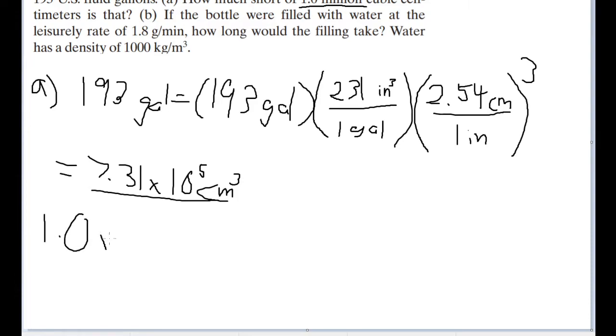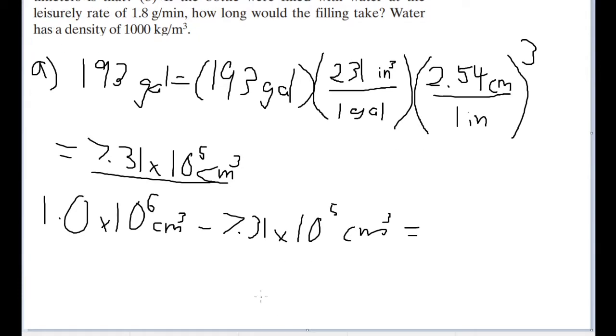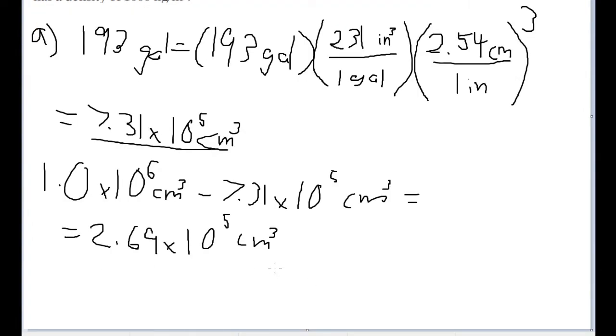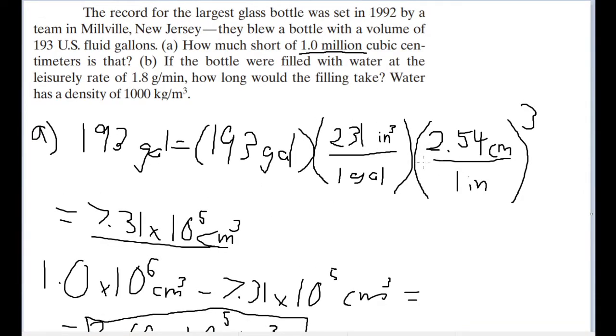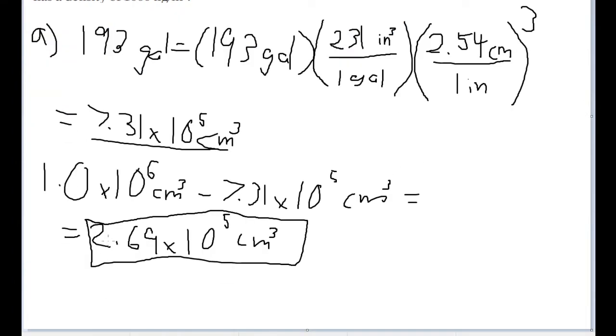So if we take 1.0 times 10 to the sixth power, that's 1 million cubic centimeters, and subtract 7.31 times 10 to the fifth power cubic centimeters from that, we find an answer of 2.69 times 10 to the fifth power cubic centimeters. And that is how far off we are. So if you're using the textbook, the Halliday textbook this question comes from, you can find these conversion factors very helpful in Appendix D. And this is our answer for part A.